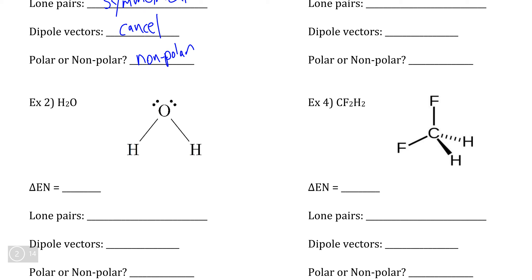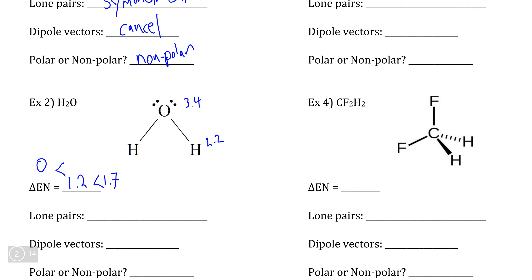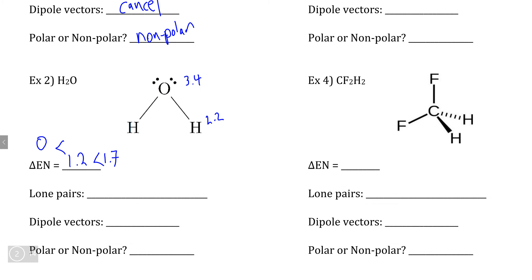Let's take a look at water as an example. If you check your periodic table, we can see that if we calculate the difference in electronegativity, we end up with a polar covalent bond. 3.4 minus 2.2 is 1.2, which is less than 1.7, so it's not ionic, but it's also greater than zero, which means it's not a non-polar covalent bond. If we draw in the vectors to show electron movement, that means that the electrons in each bond are going to be moving towards oxygen.